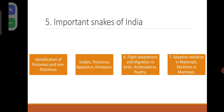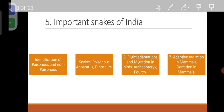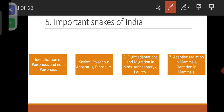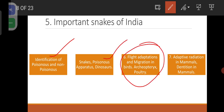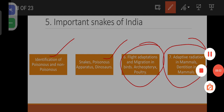Important snakes of India. Identification of poisonous and non-poisonous snakes. Poisonous apparatus. Dinosaurs. Flight adaptations and migration in birds, Archaeopteryx, poultry. Adaptive radiation in mammals. Dentition in mammals.